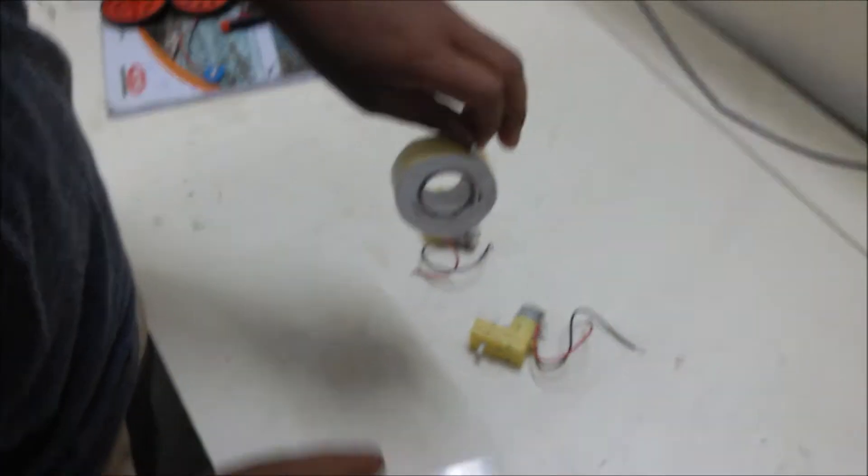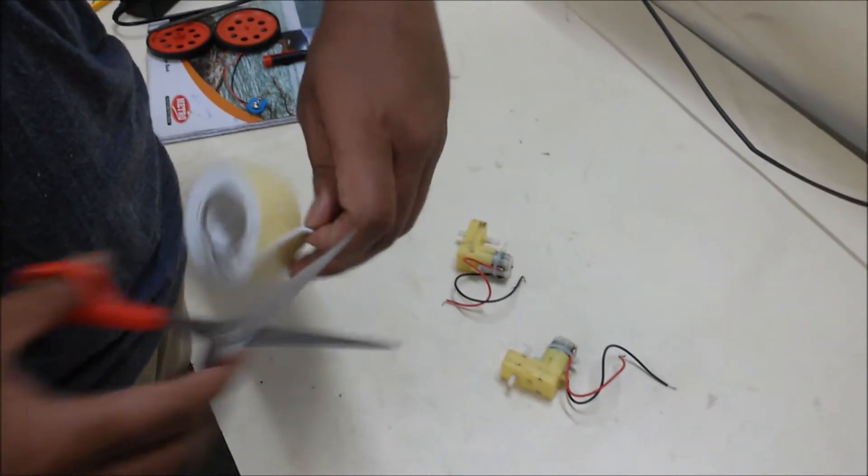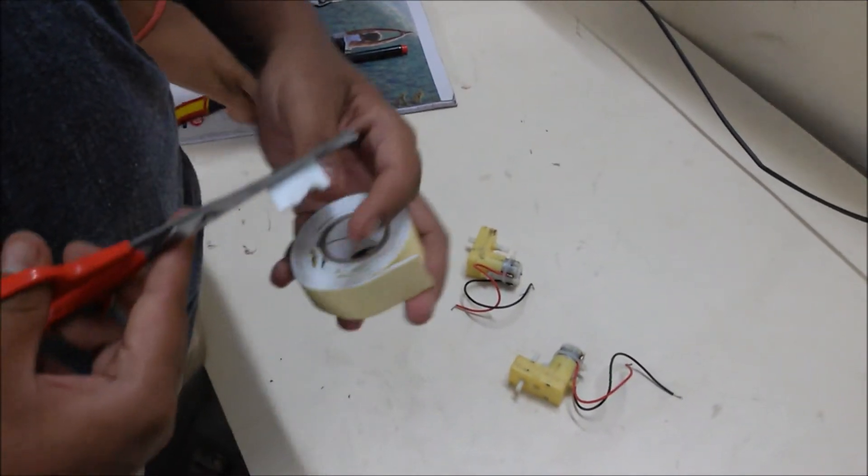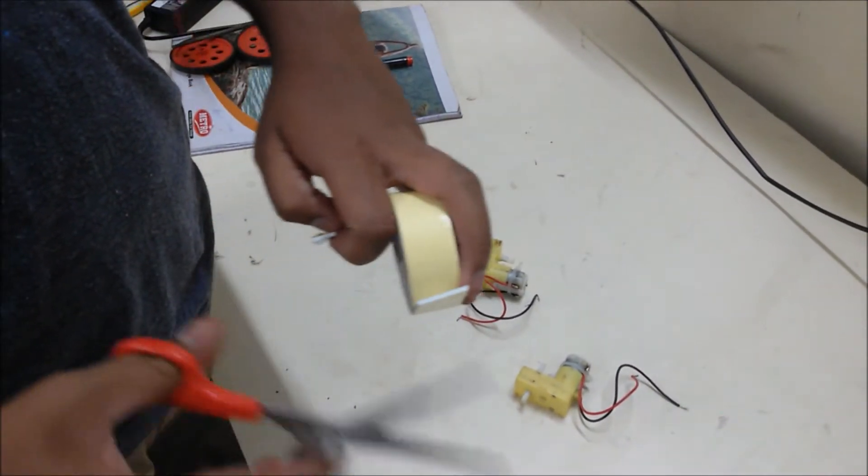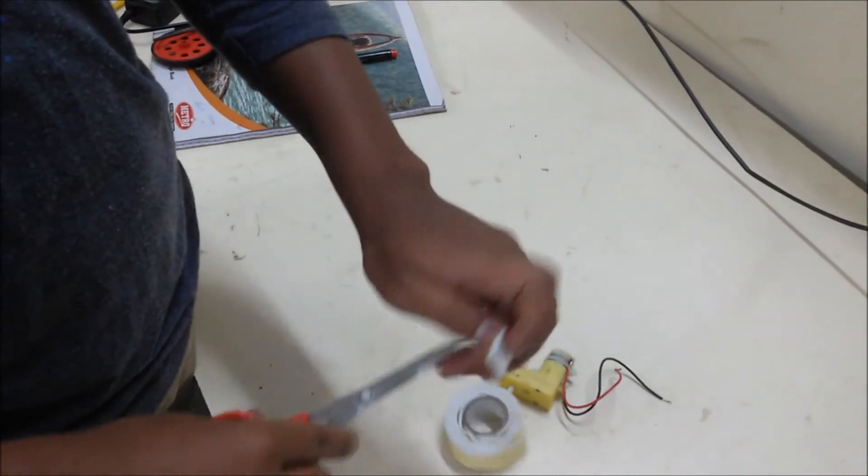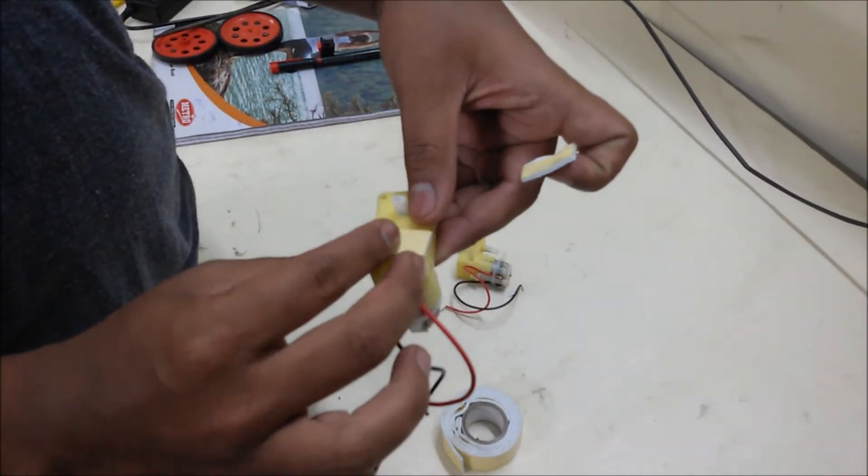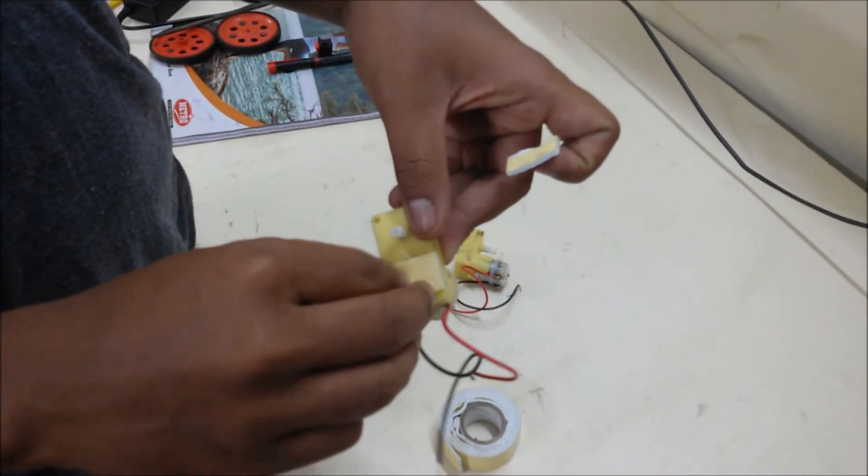Now take double-sided tape and cut it properly with the scissor. If you are a child, be careful. We can see in the video how to cut the tape and remove the wrap from both upper and lower sides.